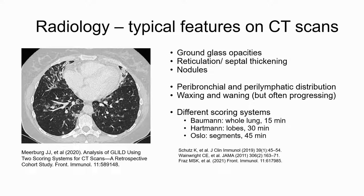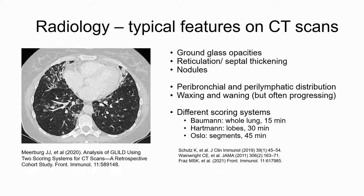Radiological examination with high-resolution CT scans is the most important diagnostic measure in ILD. Main radiological findings include ground glass opacities, reticulation and septal thickening, and the presence of nodules, typically with peribronchial and perilymphatic distribution, often waxing and waning over many years with a steady increase. Several scoring systems have been developed; the Bauman and Hartman scoring systems were compared in the STILPAD study. Both showed high inter-observer and intra-observer reproducibility, with the Hartman method performing slightly better but taking 30 minutes versus 15 for Bauman. The Bauman method assesses lungs as a whole, while Hartman assesses different lobes separately.